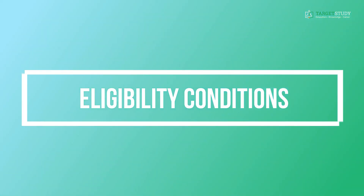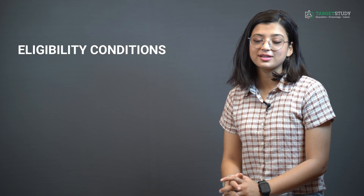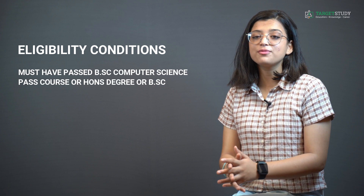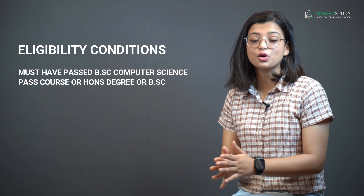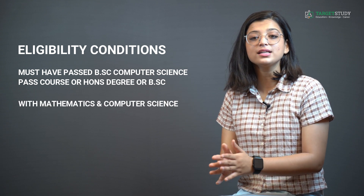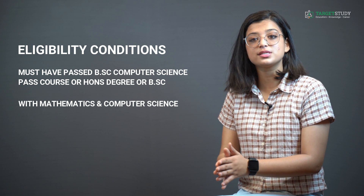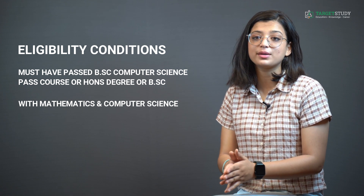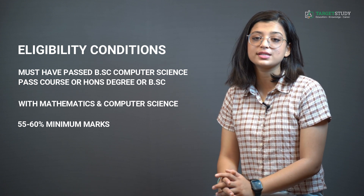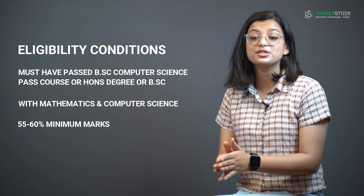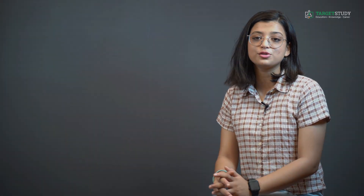Now, the eligibility conditions to join MSc Computer Science: as far as educational qualification is concerned, you must have passed BSc Computer Science, an honours degree, or BSc with subjects like mathematics and computer science from a recognized university or college. Some colleges may also demand minimum aggregate marks of 55 to 60% in bachelors. However, the eligibility criteria might differ a bit from institute to institute.